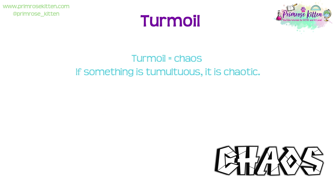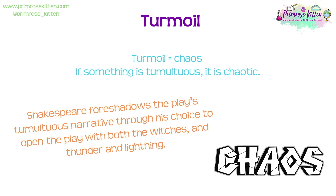Number two is turmoil or tumultuous. This one is brilliant for discussing lots of different moments in the play. Turmoil just means chaos; if something is tumultuous, it is chaotic. It's perfect for describing the witches that cause chaos. It's also perfect for describing the chaos Macbeth causes when he disrupts the great chain of being by killing King Duncan. You might even say that Macbeth and Lady Macbeth experience psychological or inner turmoil because of what they've done. An example sentence: 'Shakespeare foreshadows the play's tumultuous narrative through his choice to open the play with both the witches and thunder and lightning.'